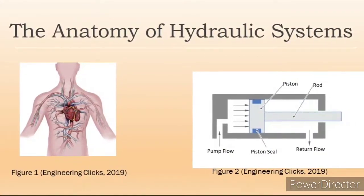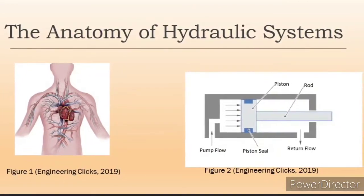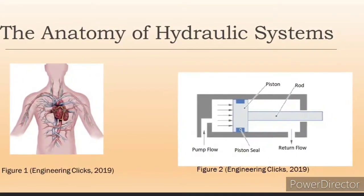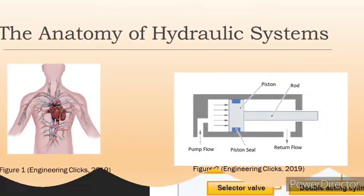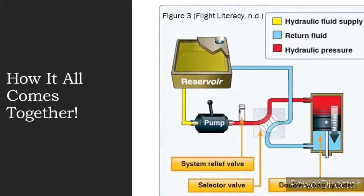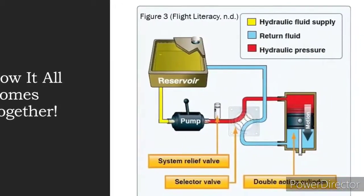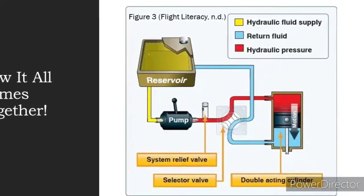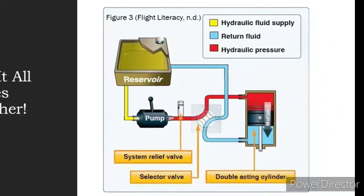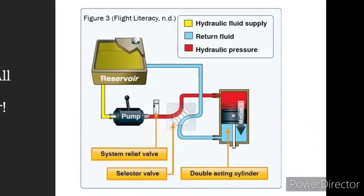If I may draw your attention to Figure 2, think of a linear actuator as a muscle. The fluid feeds the actuator the power it needs to perform the task it was designed to do, much like blood feeding a muscle. Figure 3 drives this point even further — think of the red line being the artery, sending fluid to the driving force, and the blue being a vein, bringing the fluid back to the pump.